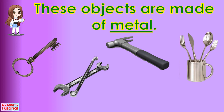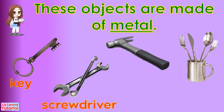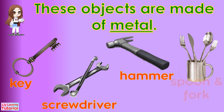These objects are made of metal: key, screwdriver, hammer, spoon and fork.